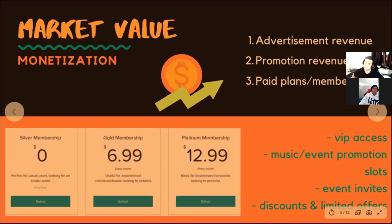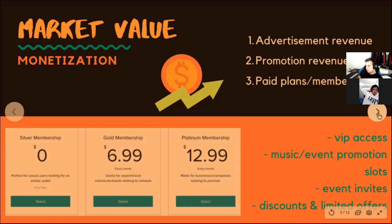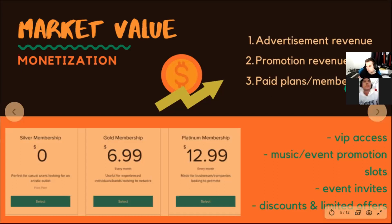Starting with market value — how do we monetize the app. There are three main ways: first, advertisement revenue, where people pay to have their advertisements showcased on the app, and if people paid for plans and memberships they wouldn't have to deal with that. Second is promotion revenue — teaming up with individual artists or music companies who want to promote their work or events on the website or app. Third is paid plans and memberships: we have three tiers — silver, gold, and platinum — each pertaining to a different type of user, with advantages including VIP access to events, music event and promotion slots, event invites, discounts, and limited offers.